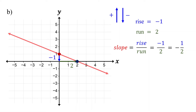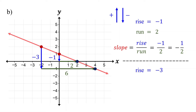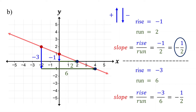By the way, no matter which point you choose on the line, the slope is always the same. Let's confirm this by using two new points. Starting at the point on the left, we need to move down three units. Remember, moving down means a negative rise, so the rise is negative three. Then, we need to move to the right six units, so the run is six. Therefore, the slope is negative three over six. If you divide both numbers by three, it simplifies to negative one over two — the same slope we found earlier. So remember, the slope is always the same regardless of which points you choose. It is a fundamental property of the line, not dependent on specific points.